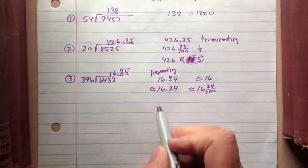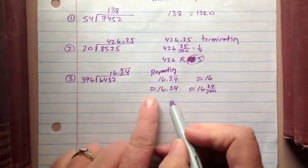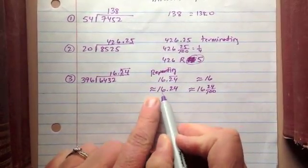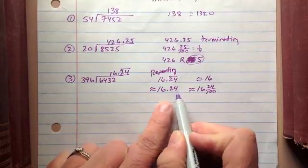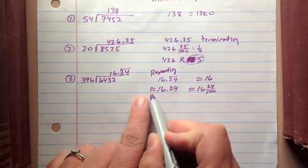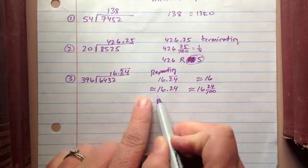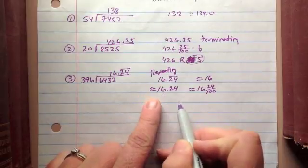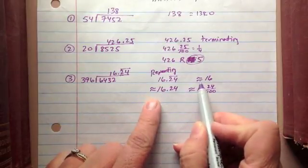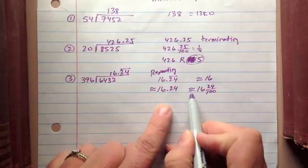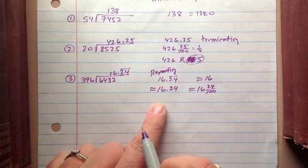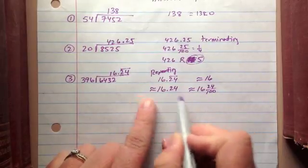You could say a sixteen-point-two-four, that it stops at two-four and doesn't repeat. But you would have to use this little squiggly sign to show that it's approximately sixteen-point-two-four. Or you could just say it's approximately sixteen, or approximately sixteen and twenty-four one-hundredths.